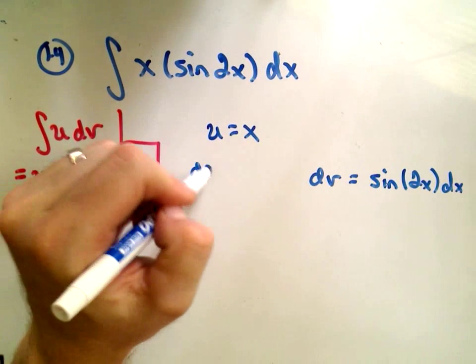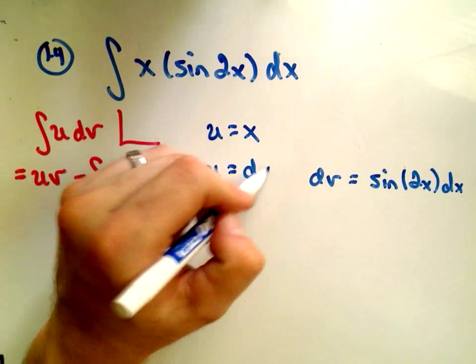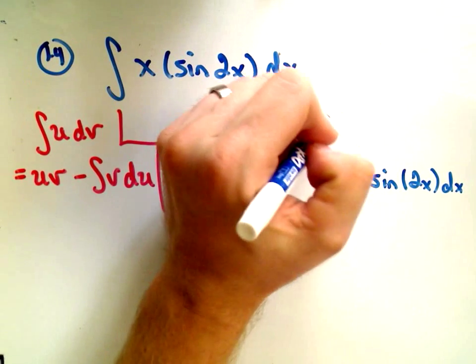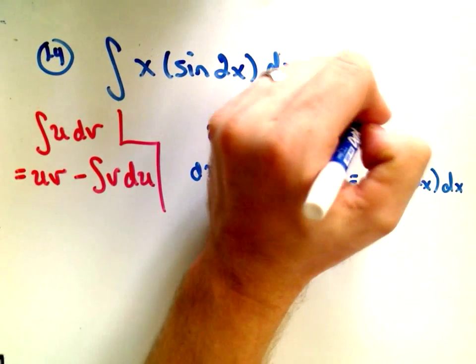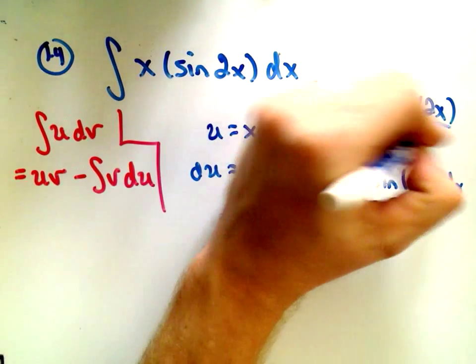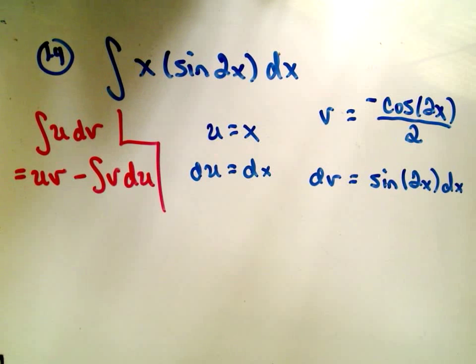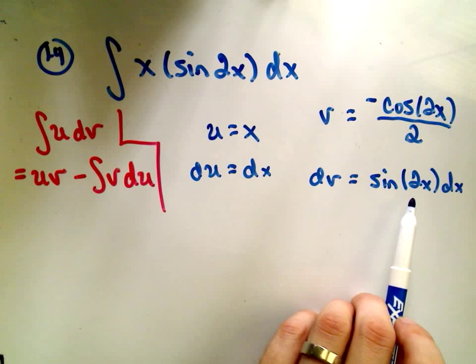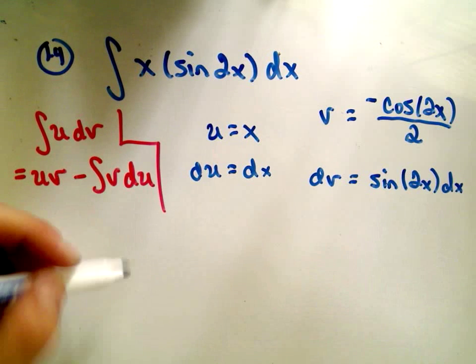If I take the derivative of u, I'll just simply get 1 dx. The anti-derivative of sine is negative cosine of 2x, and then we have to divide by the coefficient on the x. So we'll get negative cosine of 2x over 2. And again, you can integrate this just by using a u substitution off to the side.